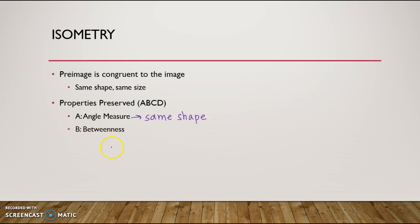The next one is betweenness—kind of a weird word. Betweenness means that if point B is between A and C when you start, point B is going to be between A and C when you end. And just very similar to that is C: collinearity. So inside collinearity we see collinear—linear is a line. So that means that the points that are on the same line before you transform have to be on the same line after you transform.